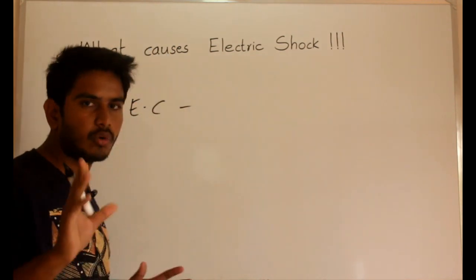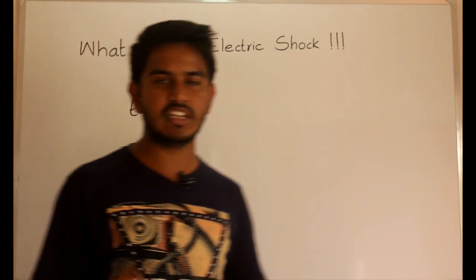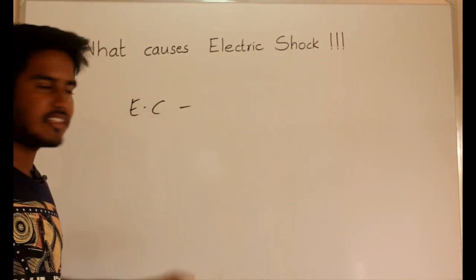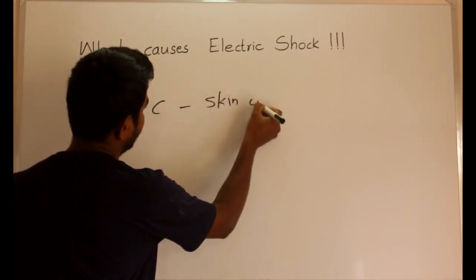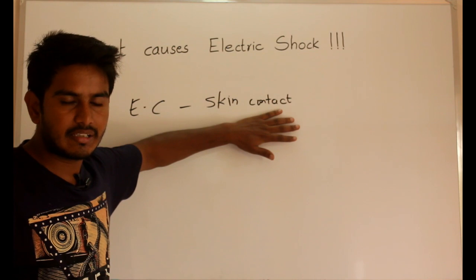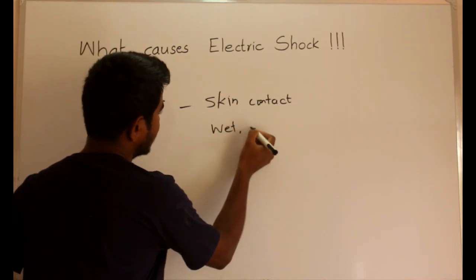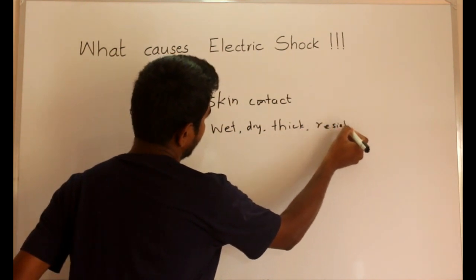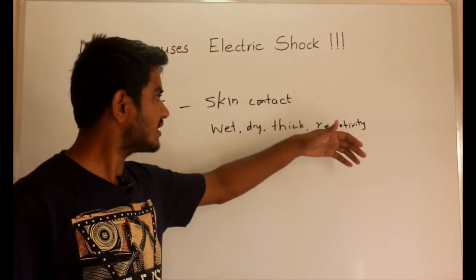The electric current which flows through the human body depends on two resistances: one is the skin contact resistance and the other is the bodily resistance. When you compare the bodily resistance with the skin contact resistance, the bodily resistance is very negligible. So the electric current which flows through the body depends on the skin contact resistance, which varies depending on whether your skin is wet or dry, how thick your skin is, and the resistivity of the skin.